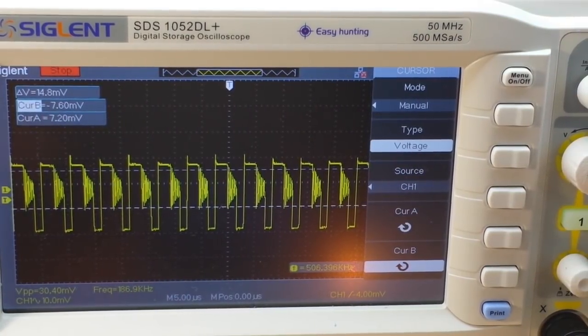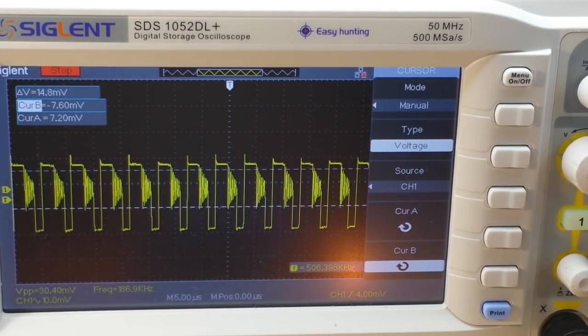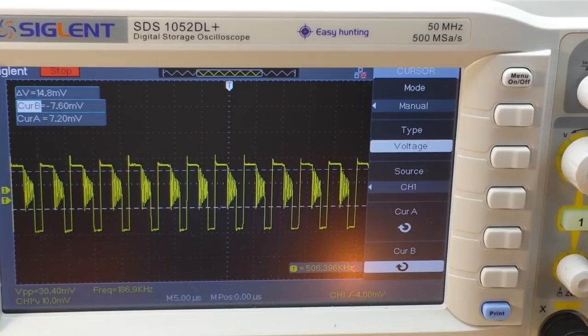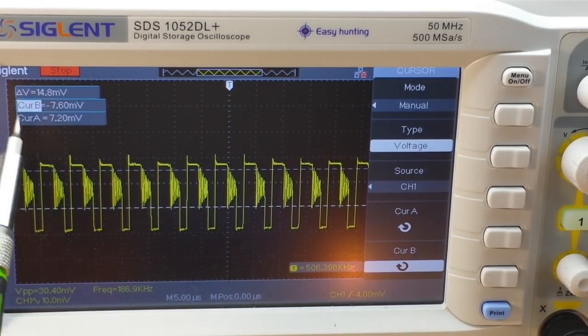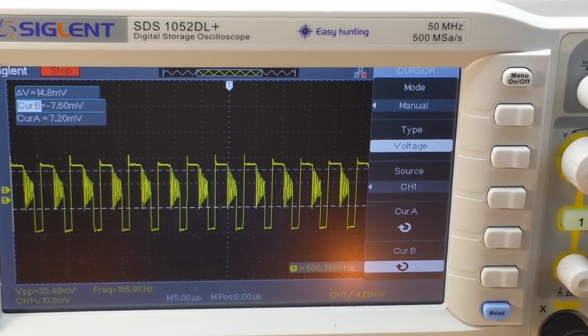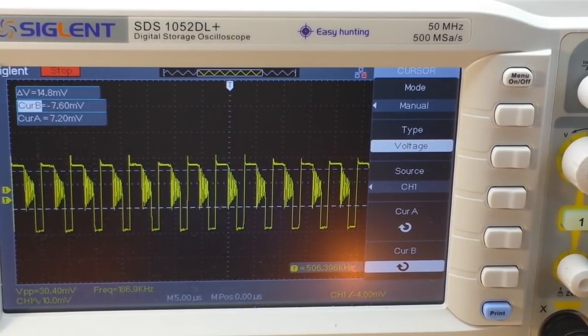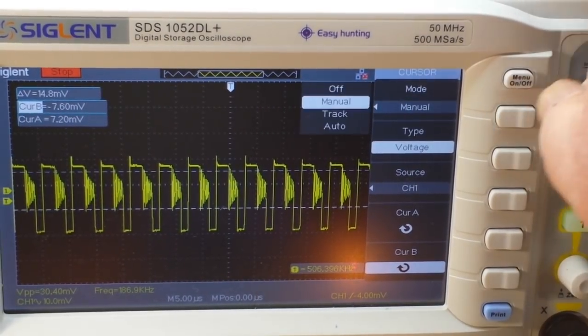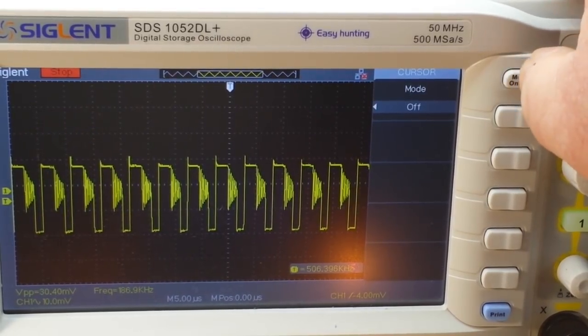14.8 millivolts. Now we said just a couple seconds ago when we looked at things that our ripple was 15 point something, and now we're seeing 14.8 volts on that ring. Well now, something tells me that it's got to be a connection in there somewhere. Am I right? I want to know what you guys think. Tell me.